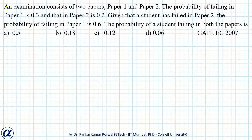In this question, we are given that an examination consists of two papers, paper 1 and paper 2. The probability of failing in paper 1 is 0.3, and in paper 2 is 0.2. Given that a student has failed in paper 2, the probability of failing in paper 1 is 0.6. This is the conditional probability of failing in paper 1 given the student has failed in paper 2. We want to find the probability of a student failing in both papers.